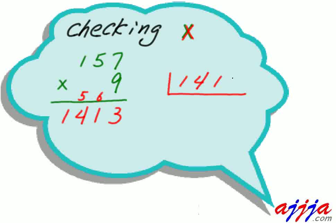Now, 1, 4, 1, 3. See? Now, divide by 9. Now, 14 divided by 9. That's right. One time. Then, 5 left.